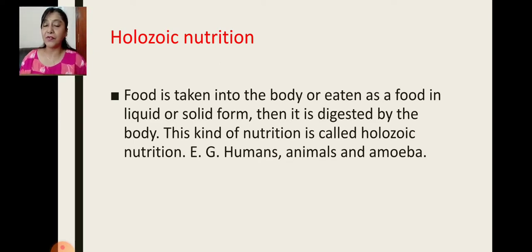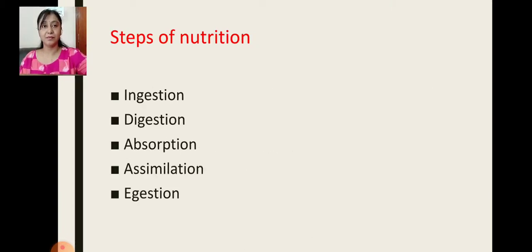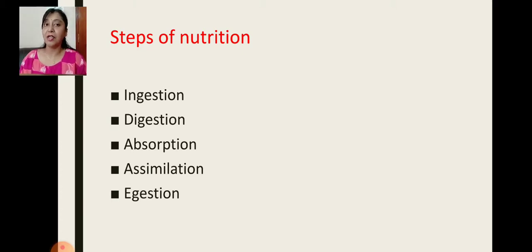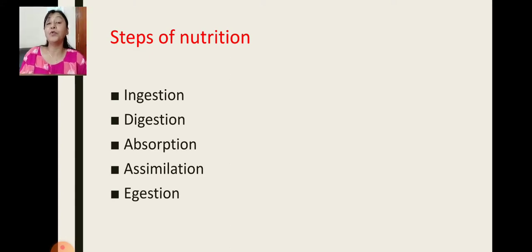Today I am going to give you the introduction of the five steps in which holozoic nutrition is performed. These are: ingestion, digestion, absorption, assimilation, and egestion. These five steps are very important in holozoic nutrition — because of these five steps we are able to utilize all the benefits we get from food.